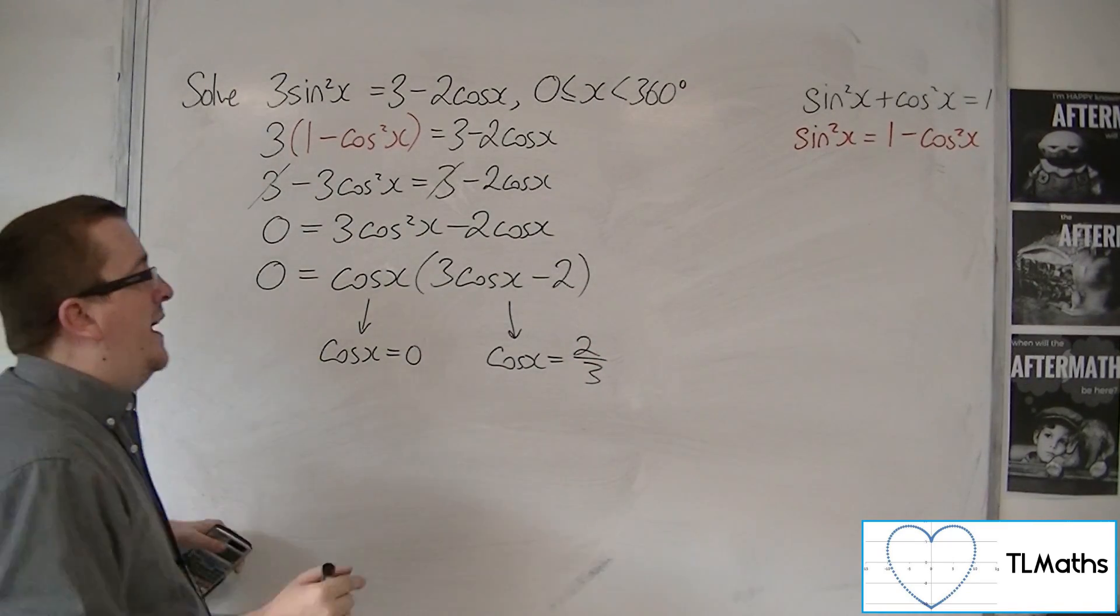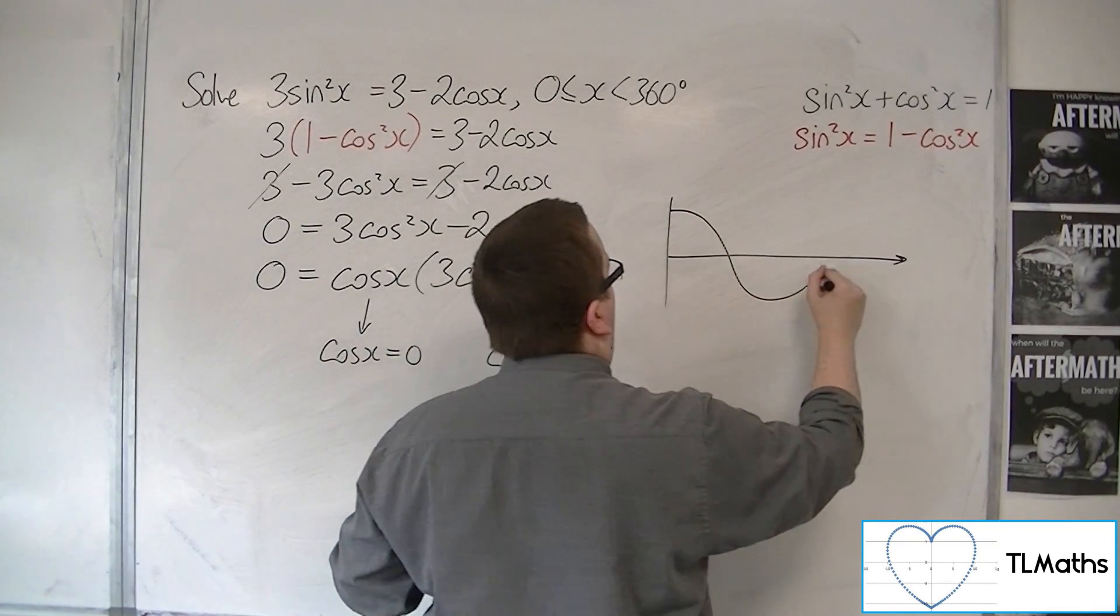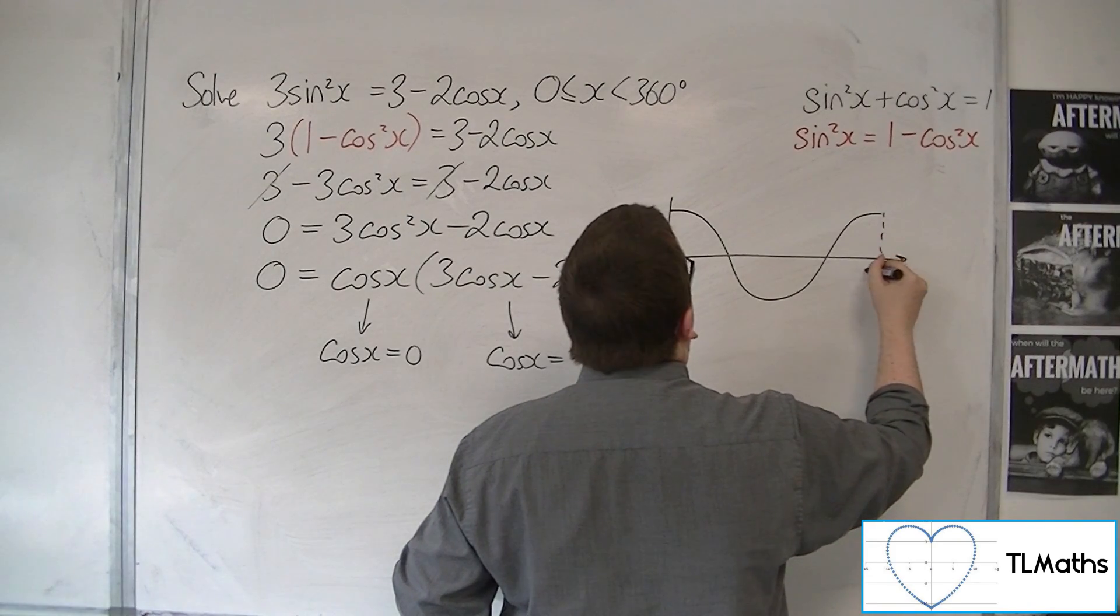So now I sketch cosine. So cosine of x looks like that, between 0 and 360.